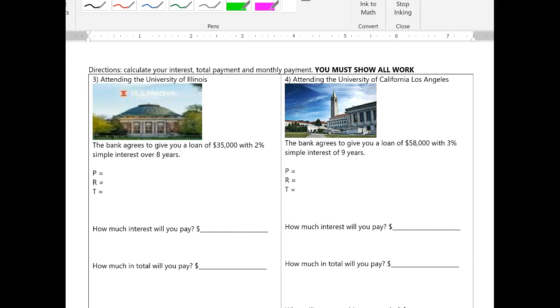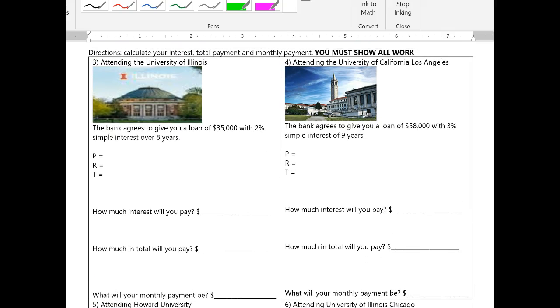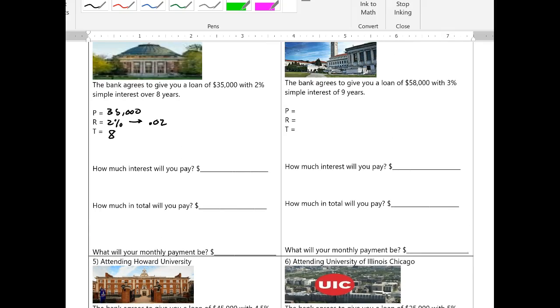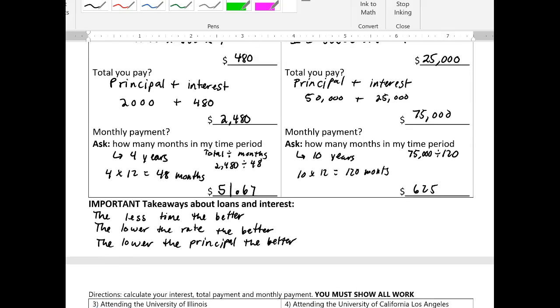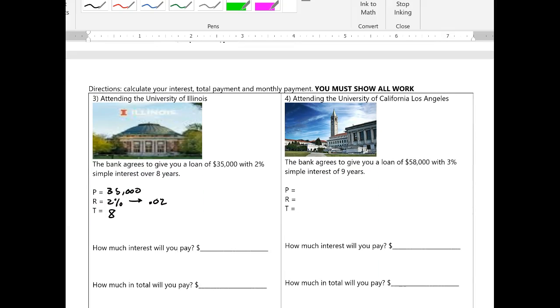So tonight for your homework, you'll just be trying to attend these four universities on those four different loans and figure out how much it costs to do that. So it says the bank is going to give you a loan of $35,000 to attend the University of Illinois. So that's your principal with a rate of 2%. Remember, it gets written as 0.02. And you got simple interest over eight years. So these questions are exactly like the ones on the front. And so I'll let you use the front notes to figure out those answers. All right, that's it.